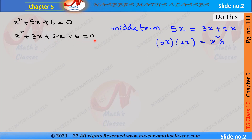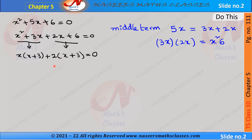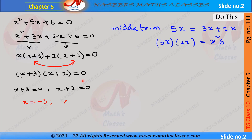So it can be written as x² + 3x + 2x + 6 = 0. In the first two terms, if we take x common, it becomes x(x + 3). In the next two terms, if we take 2 common, it becomes 2(x + 3). So we have x(x + 3) + 2(x + 3) = 0. Here x + 3 is common, so we take it out.